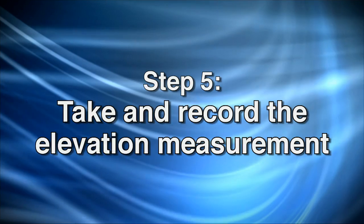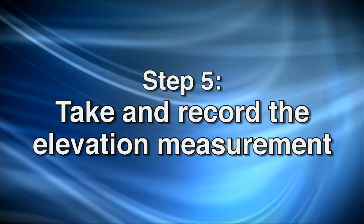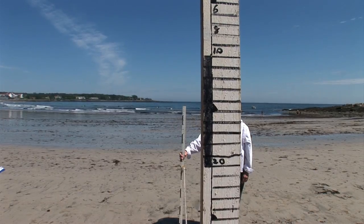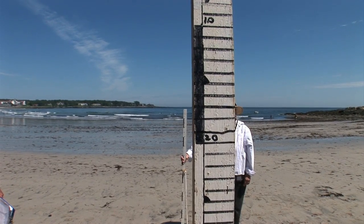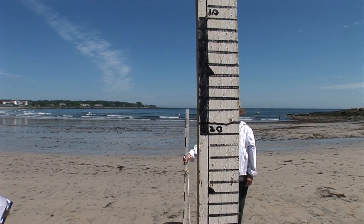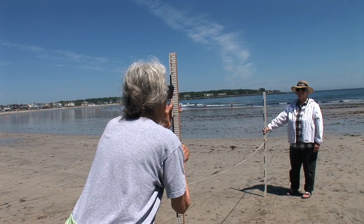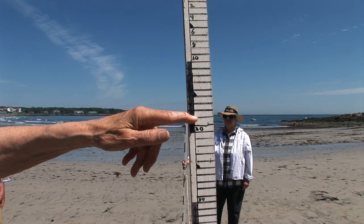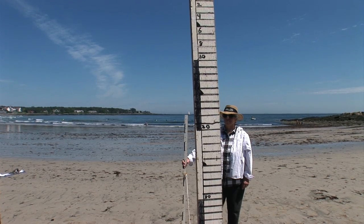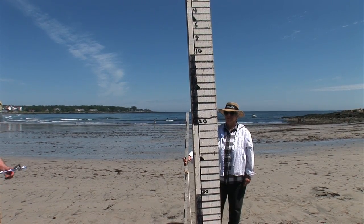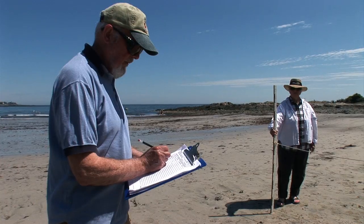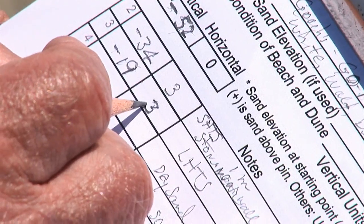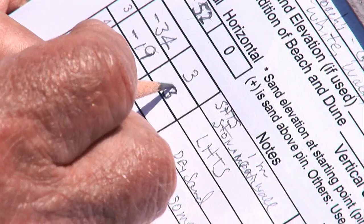For step five, take the elevation measurement and record it. Person one sights the horizon at the top of the lower pole so that they line up. This line of sight will intersect part way up the other pole. Read the elevation number marked on the other pole at the point of intersection and record this number on the data sheet. Also record the horizontal measurement, or the length of rope between the poles, which will often be three meters.